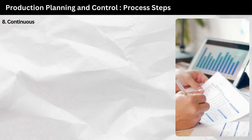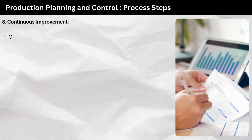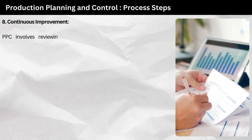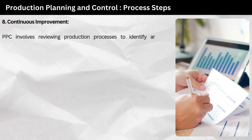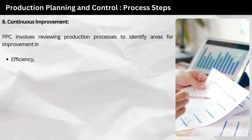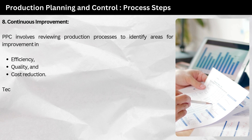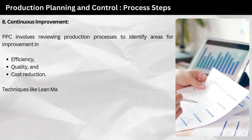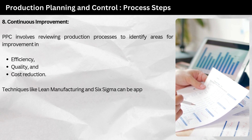Step 8: continuous improvement. PPC involves reviewing production processes to identify areas for improvement in efficiency, quality, and cost reduction. Techniques like lean manufacturing and Six Sigma can be applied here.